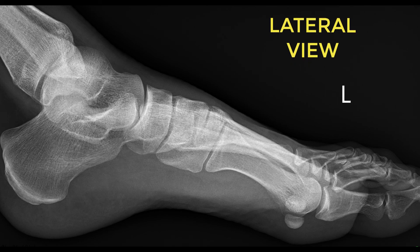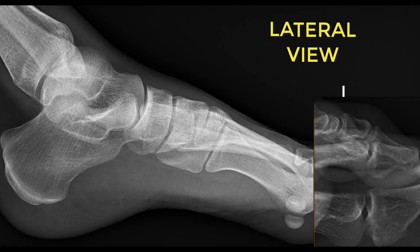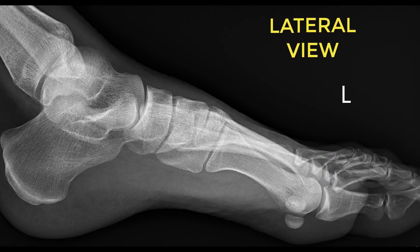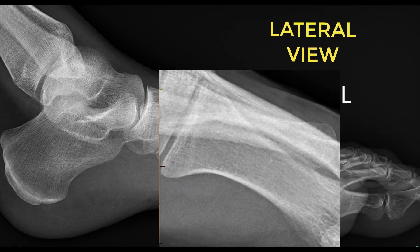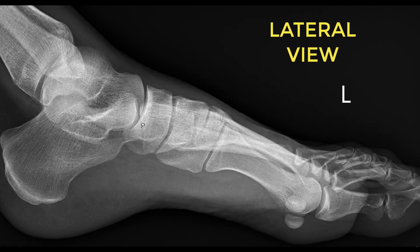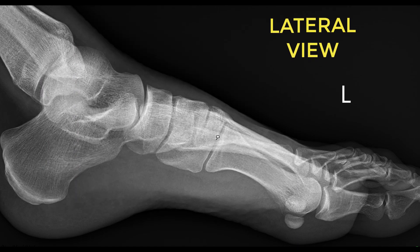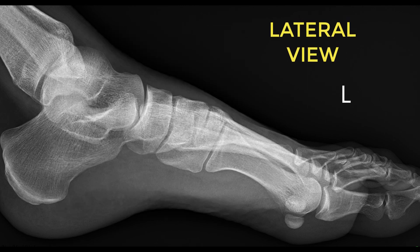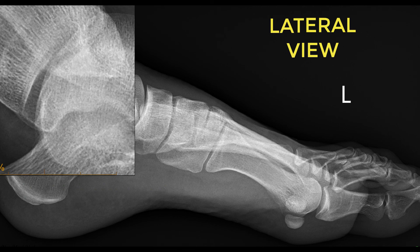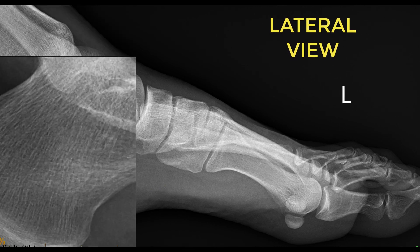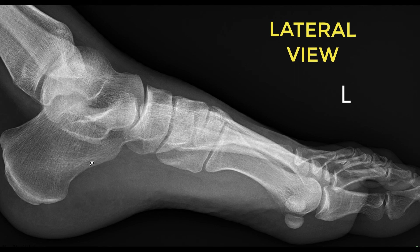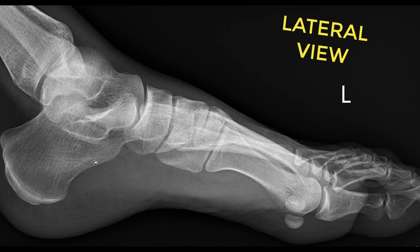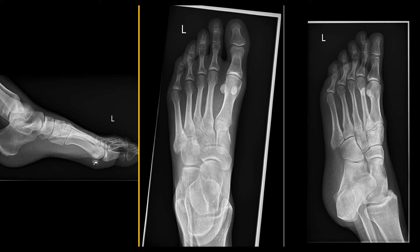On the lateral view, starting from one end, you have the phalanges, then the metatarsal bones, and then as you go proximally you come into the tarsal bones — the cuneiforms, the navicular bone, and then the talus right next to the tibia forming the ankle joint. At the bottom is the heel, or calcaneum bone.